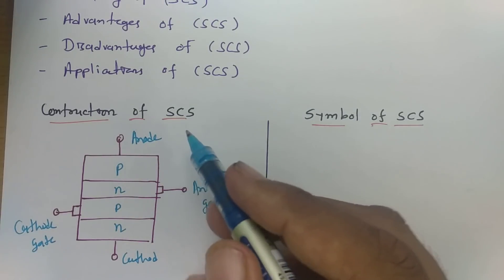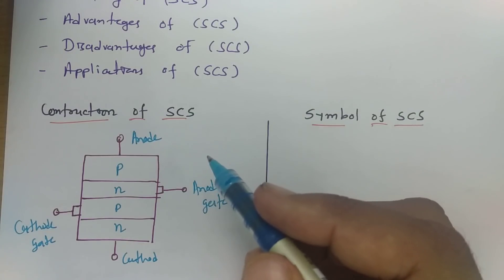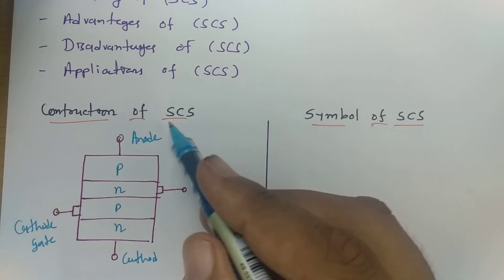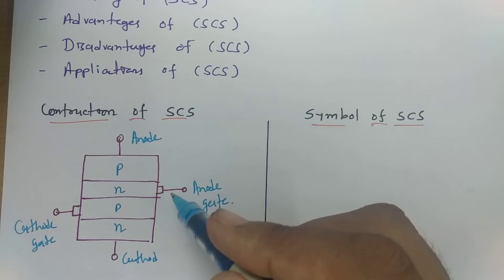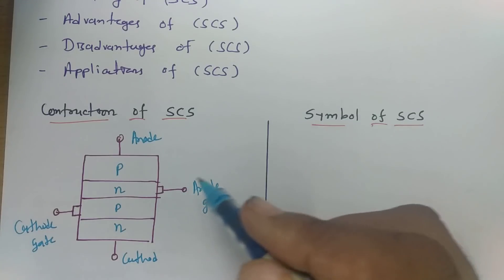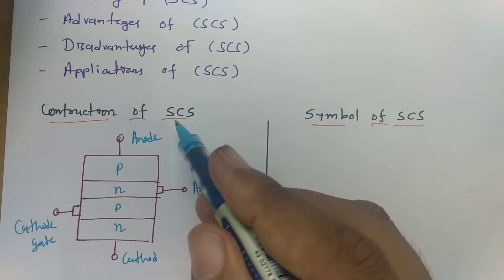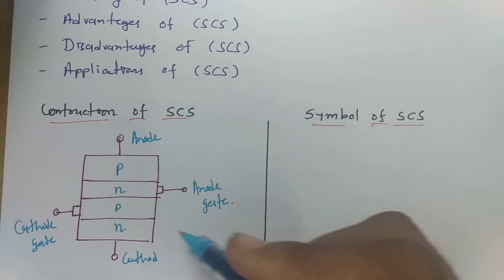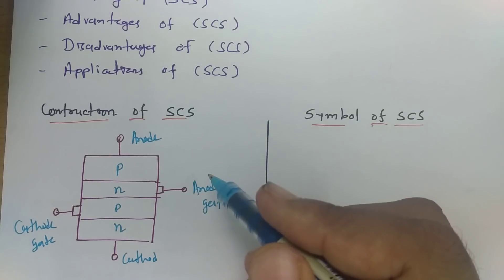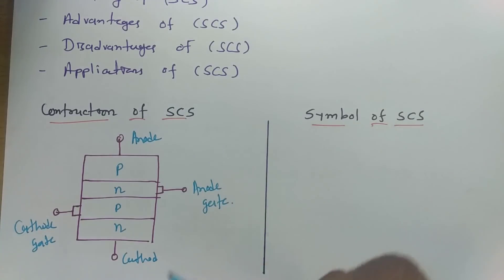The basic difference between the structure of SCR and SCS is that in SCR you don't find an anode gate, while in SCS the anode gate is the additional feature — that is what makes the Silicon Controlled Switch distinct.